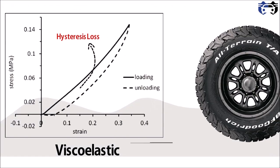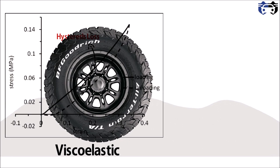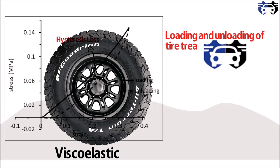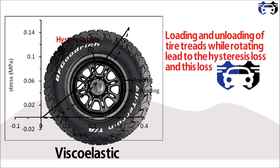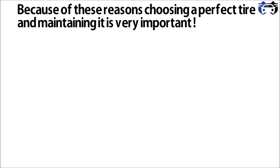As the tire rotates, this rotation leads to compression and expansion of the tire treads. Since tires are viscoelastic materials, this cycle of compression and expansion causes hysteresis or energy loss. The loading and unloading of tire treads while rotating leads to hysteresis loss, and this loss is compensated by the vehicle's engine, which affects fuel efficiency. Therefore, choosing the right tire and maintaining it is very important. A worn-out tire should be replaced, as a proper tire improves road grip and fuel efficiency. The tire should also be properly inflated to minimize hysteresis loss.